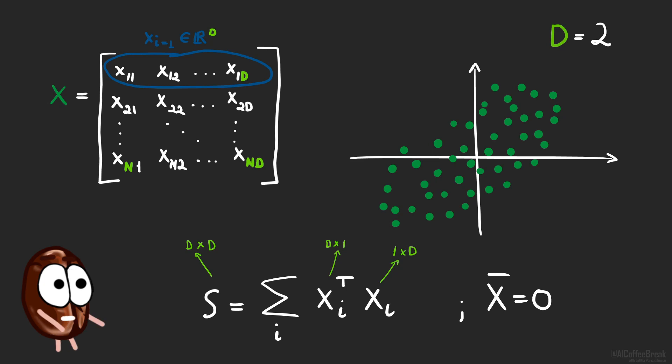We wanted to compute the main axis of the ellipse. Well, it turns out that the directions of the main axis are actually the eigenvectors of this scatter matrix. And each eigenvector has a so-called eigenvalue, which captures the importance of the eigenvectors, so the magnitude of the spread. So this is what we do, we take the scatter matrix, compute eigenvalues and eigenvectors.